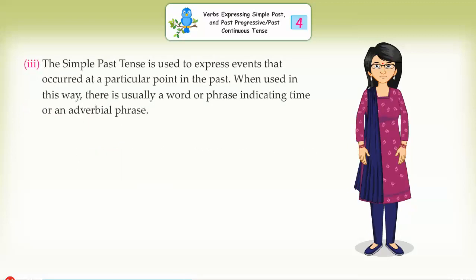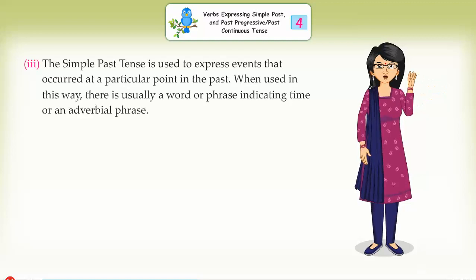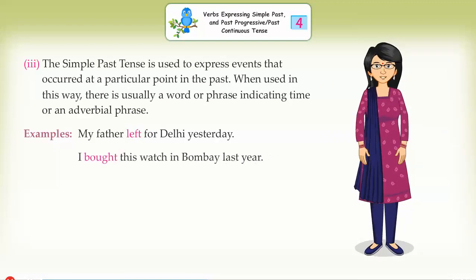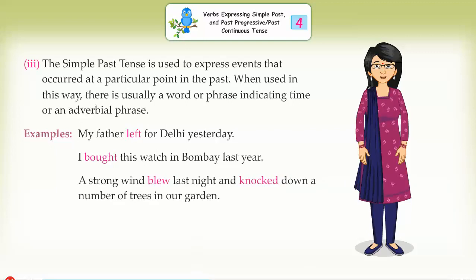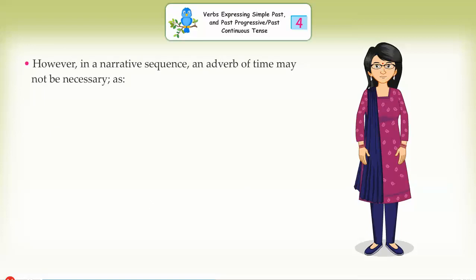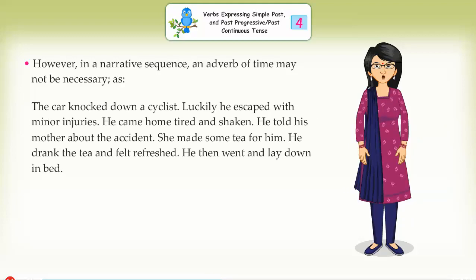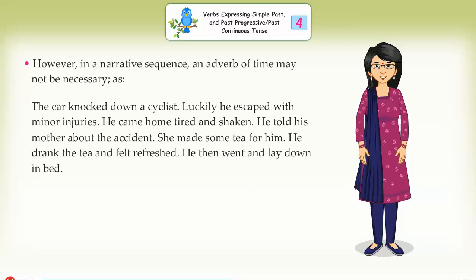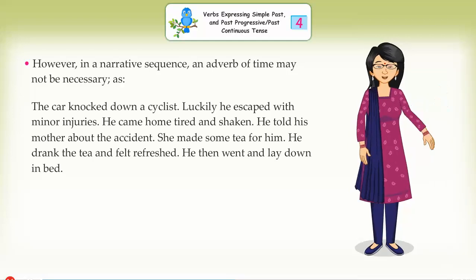Third, the simple past tense is used to express events that occurred at a particular point in the past. When used in this way, there is usually a word or phrase indicating time or an adverbial phrase. Examples: My father left for Delhi yesterday. I bought this watch in Bombay last year. A strong wind blew last night and knocked down a number of trees in our garden. However, in a narrative sequence, an adverb of time may not be necessary, as in: The car knocked down a cyclist. Luckily, he escaped with minor injuries. He came home tired and shaken. He told his mother about the accident. She made some tea for him. He drank the tea and felt refreshed. He then went and lay down in bed.